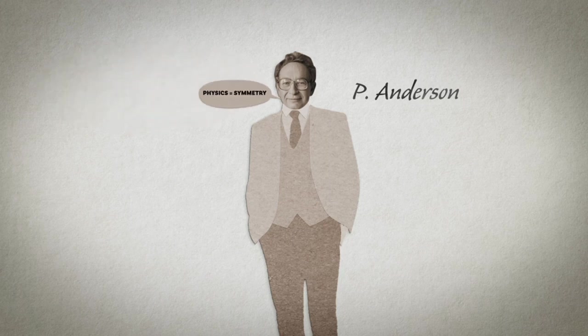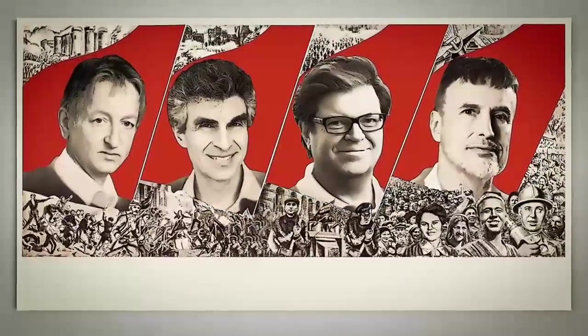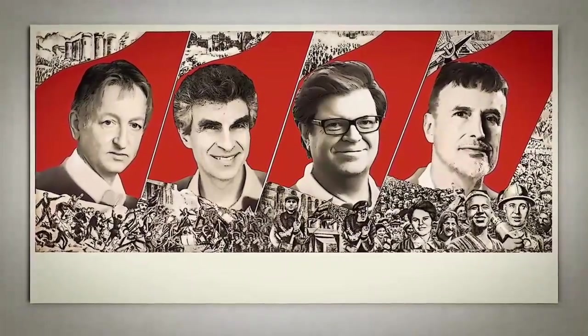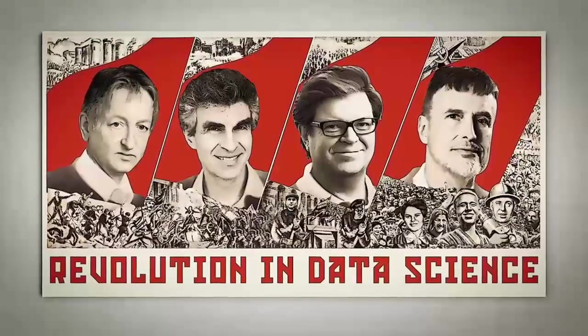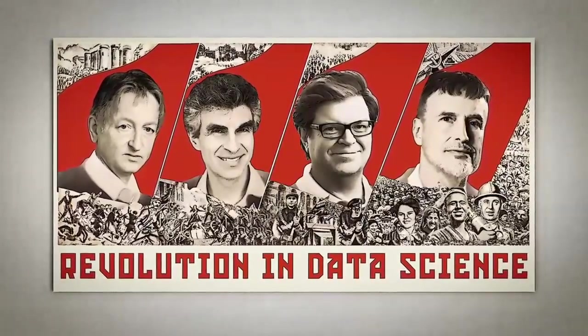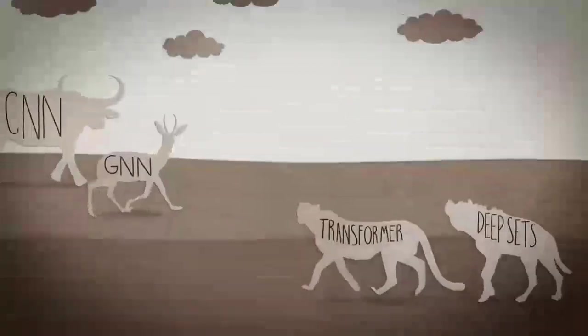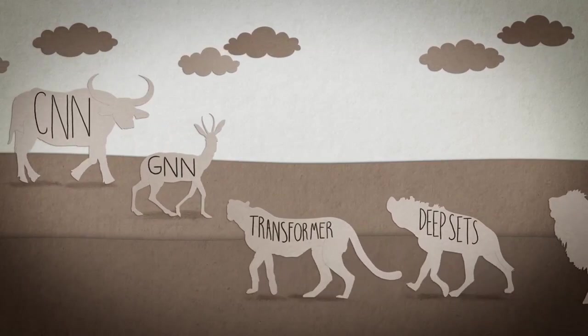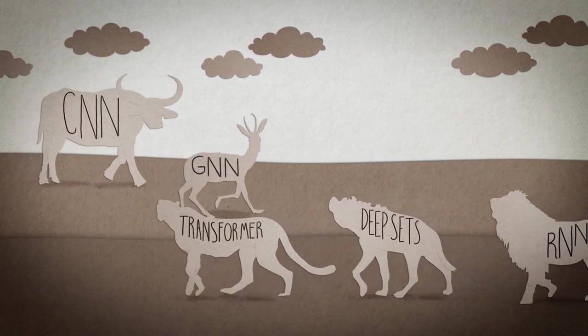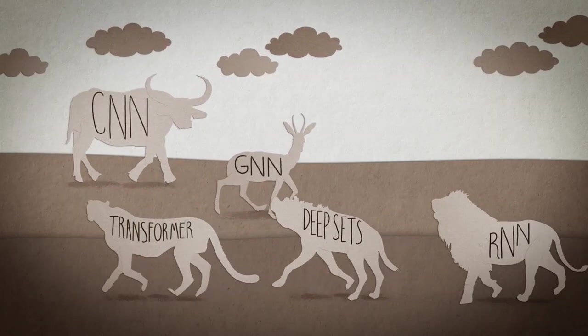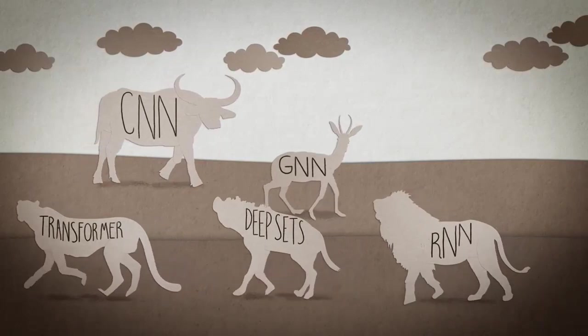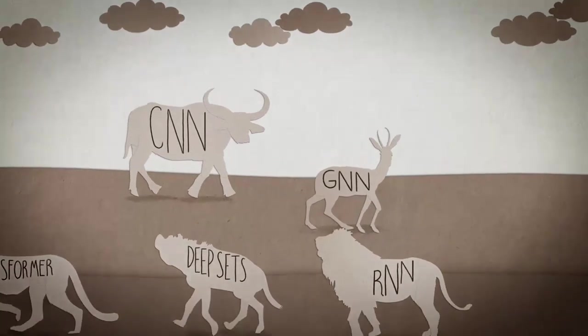You may wonder at this point what does it all have to do with deep learning. I believe that the current state of affairs in the field of deep learning reminds a lot the situation in geometry in the 19th century. On the one hand, in the past decade, deep learning has brought a revolution in data science and made possible many tasks previously thought to be beyond reach. On the other hand, we now have a zoo of different neural network architectures for different types of data, but few unifying principles. As a consequence, it is difficult to understand the relations between different methods, which inevitably leads to the reinvention and rebranding of the same concepts. So we need some form of geometric unification in the spirit of the Erlangen program that I call geometric deep learning.